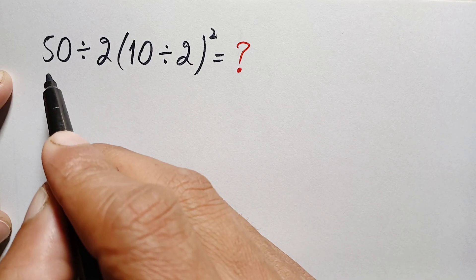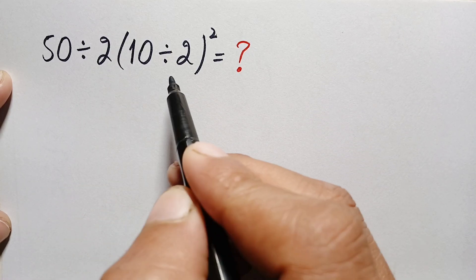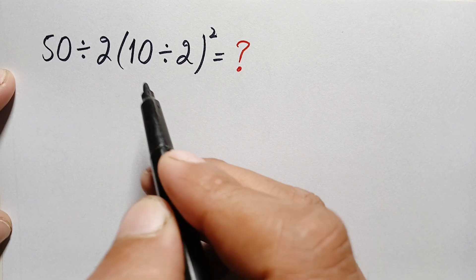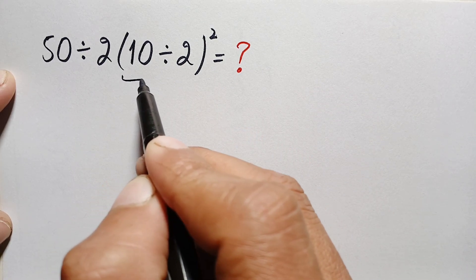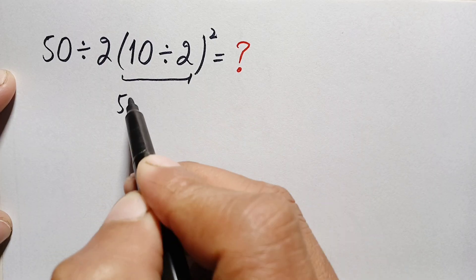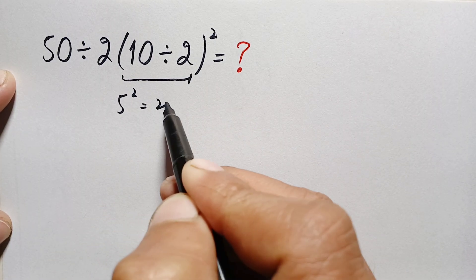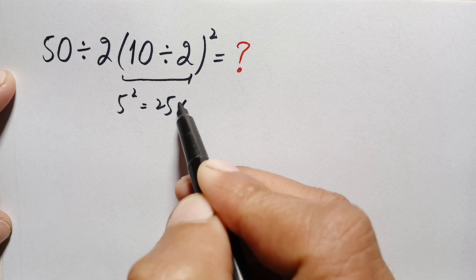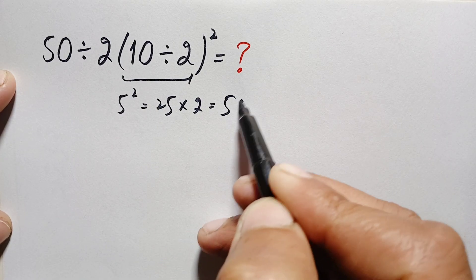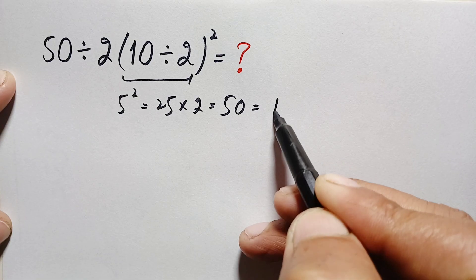What is the correct answer of 50 divided by 2 times 10 divided by 2, whole square? Here, 10 divided by 2 is simply 5, so this becomes 5 squared. 5 squared is simply 25, and 25 times 2 is 50, and dividing 50 by 50 gives 1.